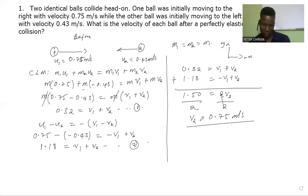We can use this v2 to find v1 by substituting in any of the equations. Let's take equation one. If we make v1 the subject of the formula, it's going to be 0.32 minus v2. So v1 is basically 0.32 minus 0.75, v1 is equal to negative 0.43 meter per second.